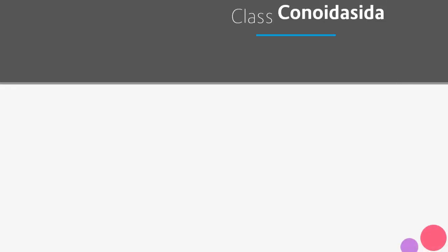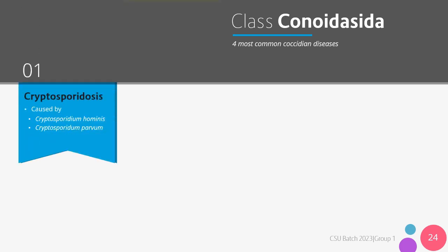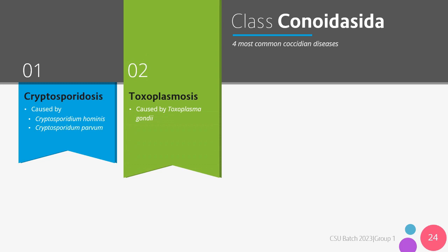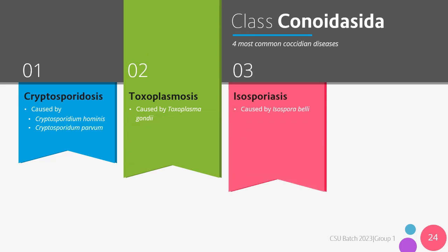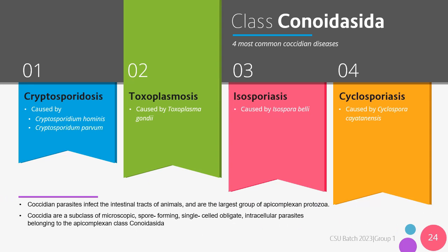We will now go to the class Conoidasida. Under this class we have four most common coccidian diseases. First, we have cryptosporidiosis caused by the organisms Cryptosporidium hominis and Cryptosporidium parvum. Second, we have toxoplasmosis caused by the organism Toxoplasma gondii. Third, we have isosporiasis caused by Isospora belli. And lastly, we have cyclosporiasis, caused by Cyclospora cayetanensis. These coccidian parasites infect the intestinal tracts of animals and are the largest group of apicomplexan protozoa. Coccidia are a subclass of microscopic, spore-forming, single-celled obligate intracellular parasites belonging to the apicomplexan class of Conoidasida.